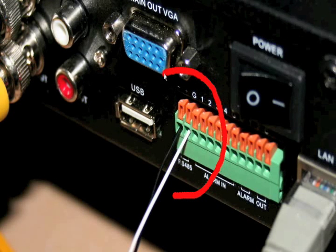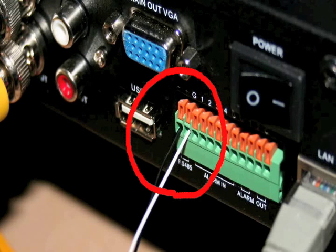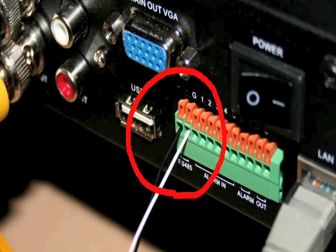Connect the two RS485 wires into the back of the DVR, and you should now have full control over the movement of the camera.